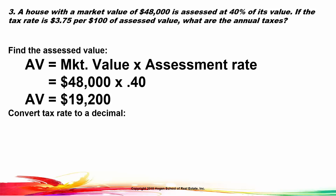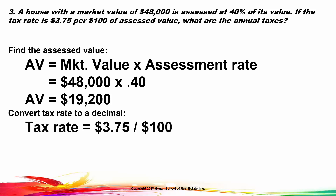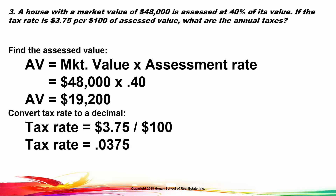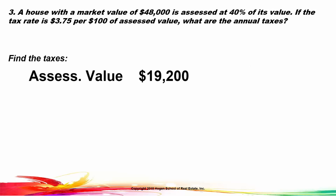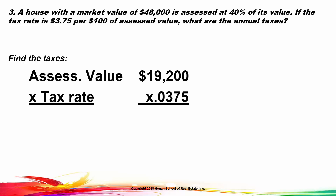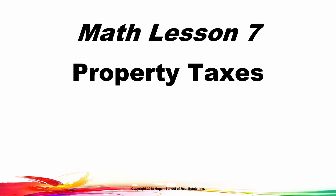Then we need to convert the tax rate to a decimal. The tax rate is $375 per $100 of assessed value, so our tax rate as a pure decimal is .0375. We find the taxes by multiplying the assessed value by the tax rate, which gives us property taxes of $720. That's it for math lesson number seven on property taxes.